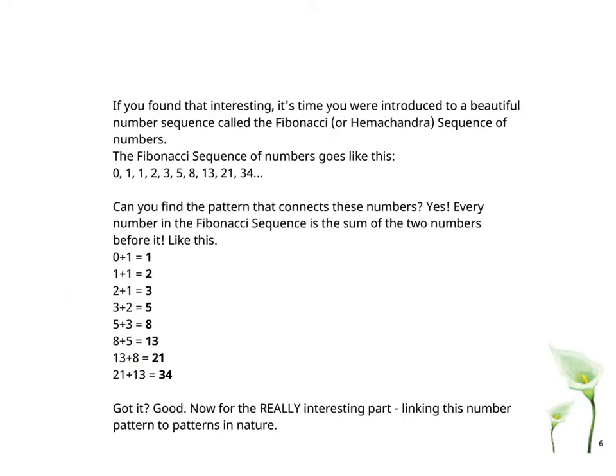A number pattern has become a shape pattern. If you found that interesting, it's time you were introduced to a beautiful number sequence called the Fibonacci or Hemachandra sequence of numbers. The Fibonacci sequence of numbers goes like this: 0, 1, 1, 2, 3, 5, 8, 13, 21, 34. Can you find the pattern that connects these numbers? Yes, every number in the Fibonacci sequence is the sum of the two numbers before it. So like this: 0 + 1 = 1, 1 + 1 = 2, 2 + 3 = 5, 5 + 3 = 8, 8 + 5 = 13, 13 + 8 = 21, 21 + 13 = 34. Got it? Good!